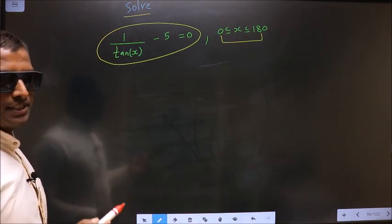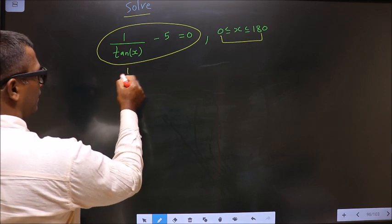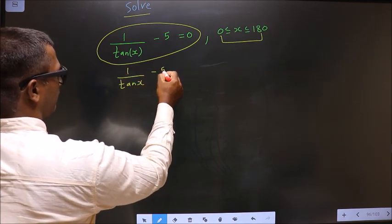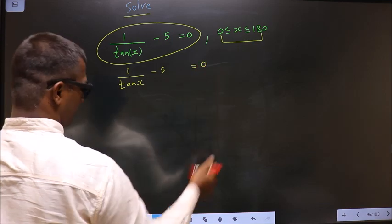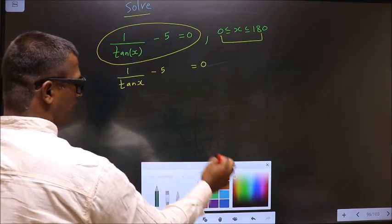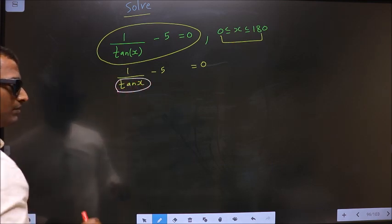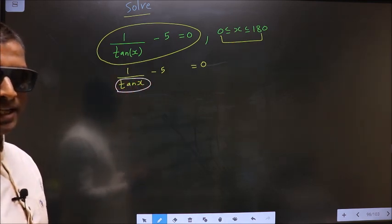First, the given equation is 1 by tan x minus 5 equal to 0. Now in this equation you have tan, so now you should make tan the subject.